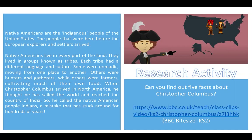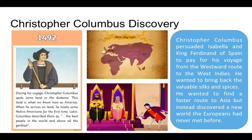Here is a research activity for you to have a go at. Watch the video on BBC Bite Size and it will tell you more interesting facts about Christopher Columbus. On a piece of paper can you write five new facts about Christopher Columbus? Christopher Columbus persuaded Isabella and King Ferdinand of Spain to pay for his voyage on the westward route to the West Indies. He wanted to bring back the valuable silks and spices. He wanted to find a faster route to Asia but instead discovered a new world that the Europeans had never met before.